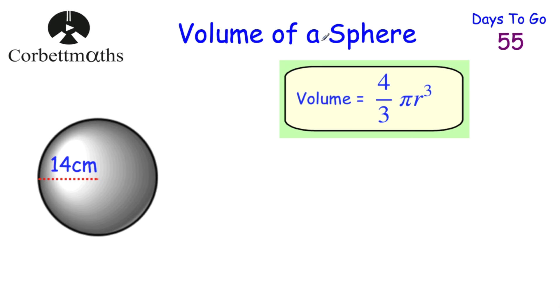Today we're going to be looking at the volume of a sphere. If we want to find the volume of a sphere, we use the formula V = 4/3 π r³. That formula is given to you, but it's just one to remember — the volume of a sphere is 4/3 π r³.